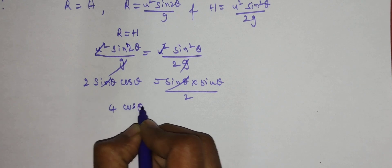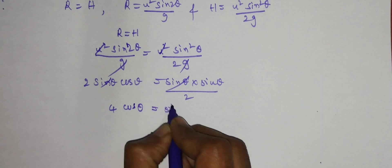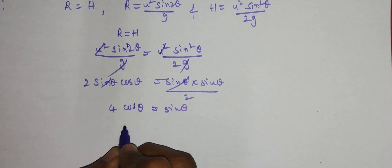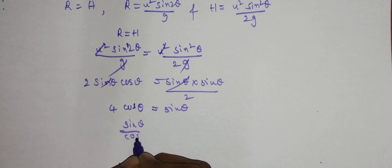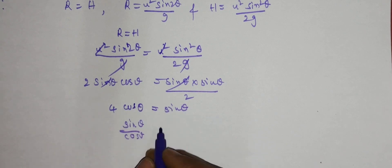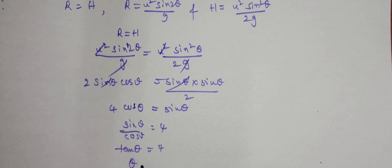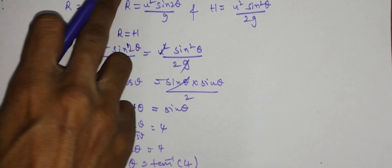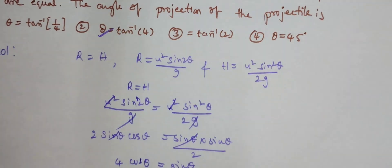So 4 cos theta is equal to sin theta, which gives us sin theta by cos theta is equal to 4. Therefore, tan theta is equal to 4 and theta is equal to tan inverse of 4. Checking the options, option number 2 is correct.